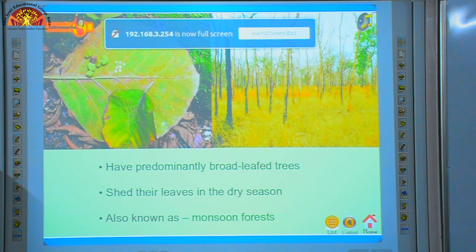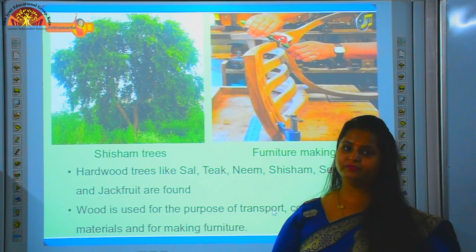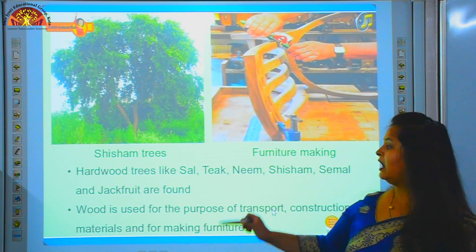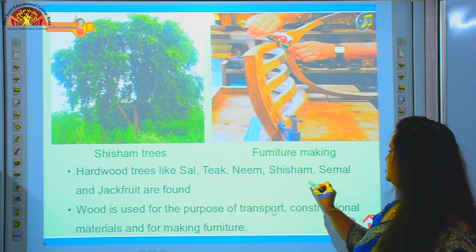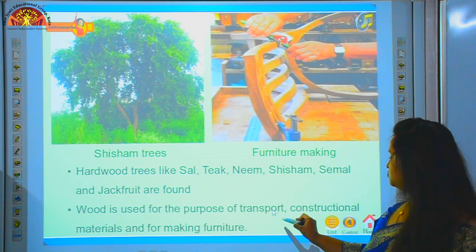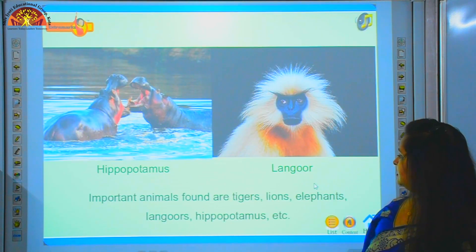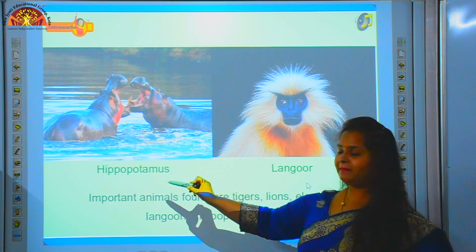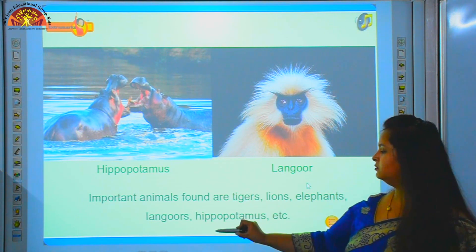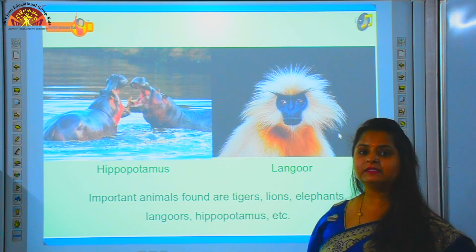What kind of vegetations are found in tropical deciduous forest? Hardwood trees like sal, teak, neem, shisham, and jackfruit are found. Shisham trees are used for making furniture. Wood is used for transport, constructional materials, and making furniture. Important animals found are tigers, lions, elephants, langoos, hippopotamus, etc. — these are the wildlife found in tropical deciduous forest.